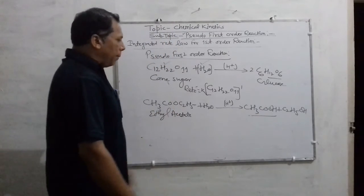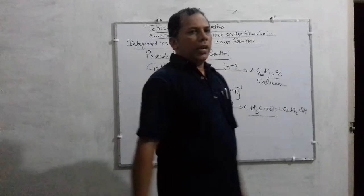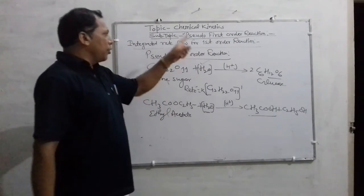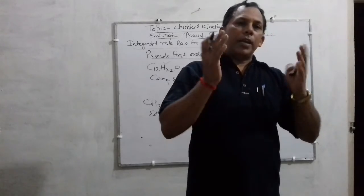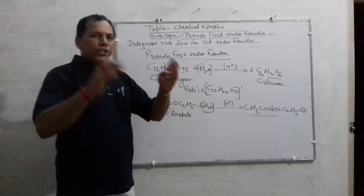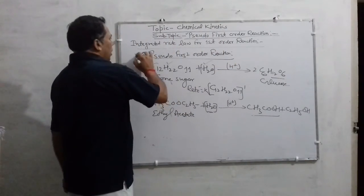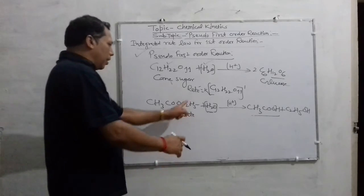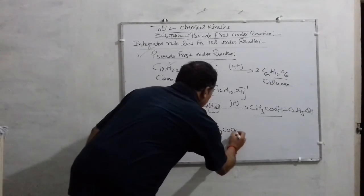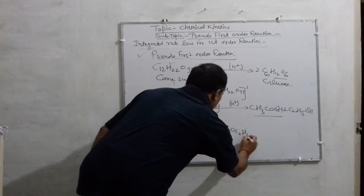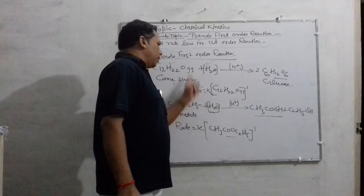In this example also, the concentration of water is quite large and cannot be changed appreciably. That is why, according to the definition, under certain conditions, the reaction shows first order behavior. But actually it is not a first order reaction. The reaction which is truly not a first order reaction but under certain conditions becomes first order is termed a pseudo first order reaction. The rate can be given as: rate equals K[CH₃COOC₂H₅].